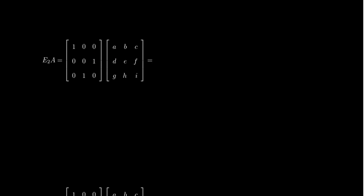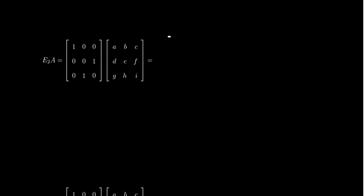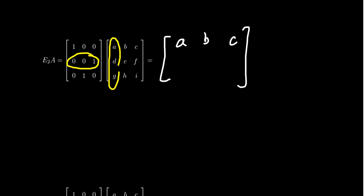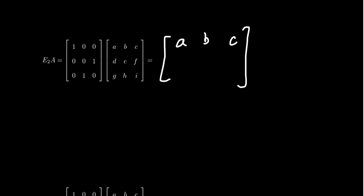What happens when we multiply by E2, the interchange matrix? The first row of E2 matches the identity, so you get a, b, c from A. The second row of E2 is [0, 0, 1], which picks up the third row of A: g, h, i. So we end up getting the third row of A in the second row position of the product.